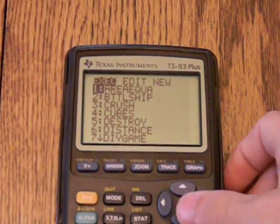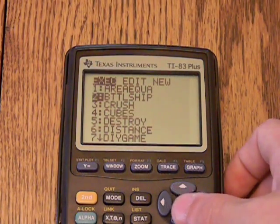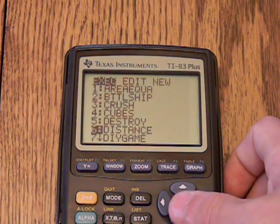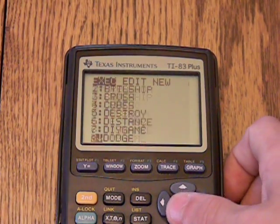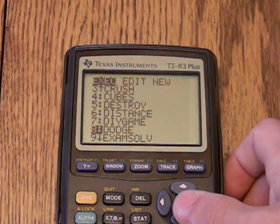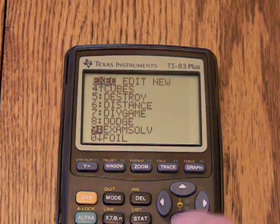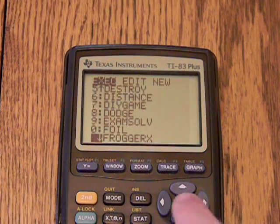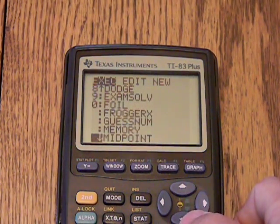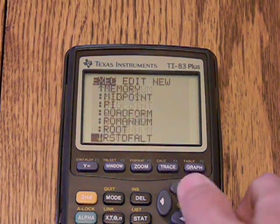I've got an Area Equations, a fake one called Battleship, which I'll get into later. I've got Crush, which is a game. Distance, which is a math program. Do-it-yourself game. I've got Dodge. Foil, that doesn't work. Frogger X, which is kind of new. Midpoint, Memory, Pi, Quadratic Formula, Roman Number Conversion.